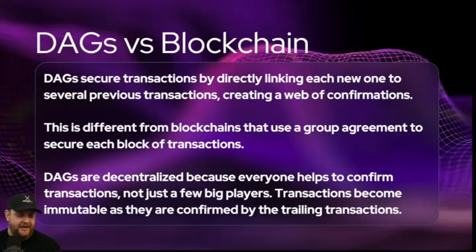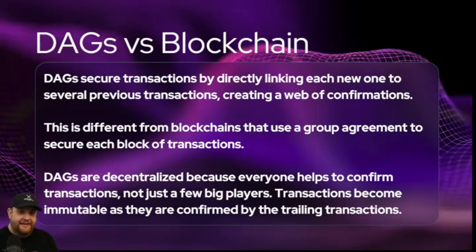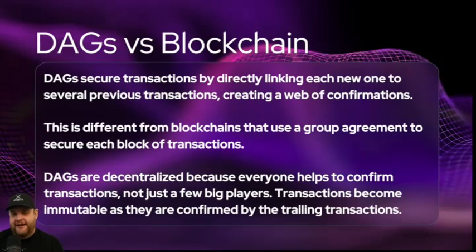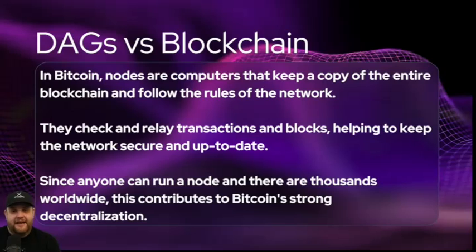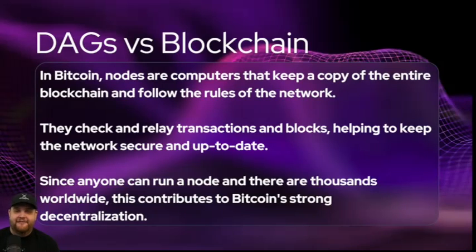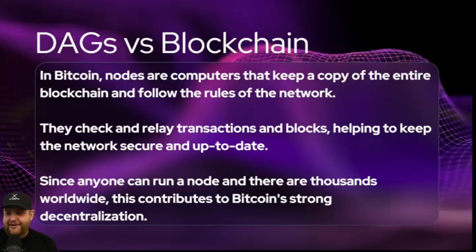Even when you look at Bitcoin, look at who's confirming the blocks — you start to see the same miners, typically big mining companies. Even though Bitcoin is the biggest and most decentralized network, there has been some question about whether the miners are too centralized and too big. That high difficulty keeps the network straight. In Bitcoin, nodes are computers that keep a copy of the entire blockchain and follow the rules, and they can check and relay transactions and blocks, helping keep the network secure and up to date.